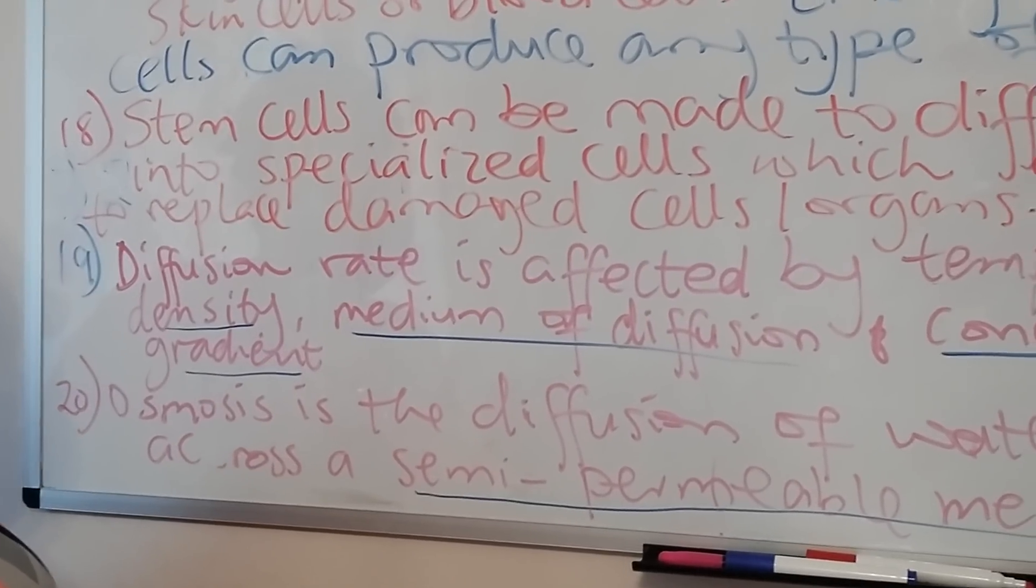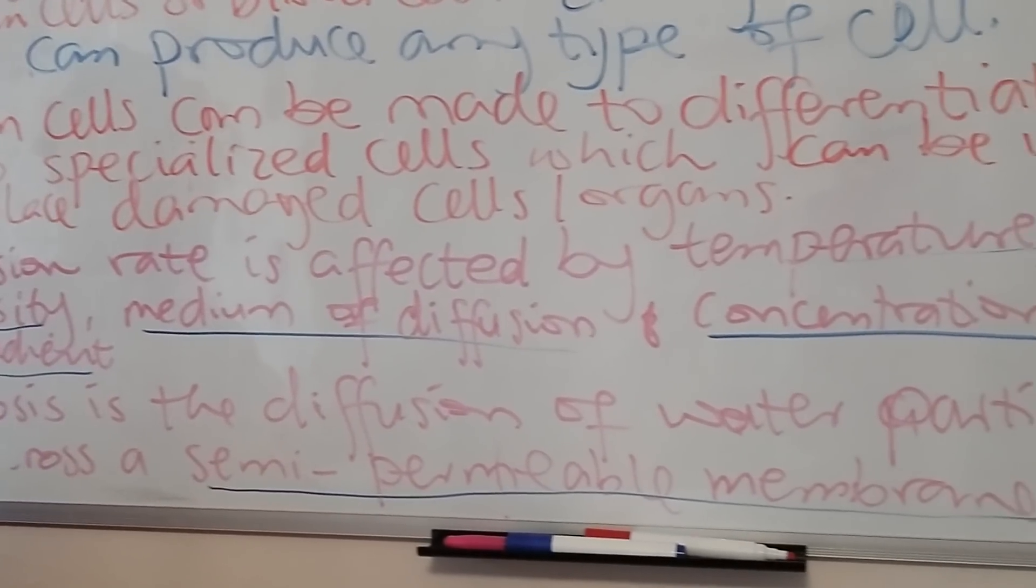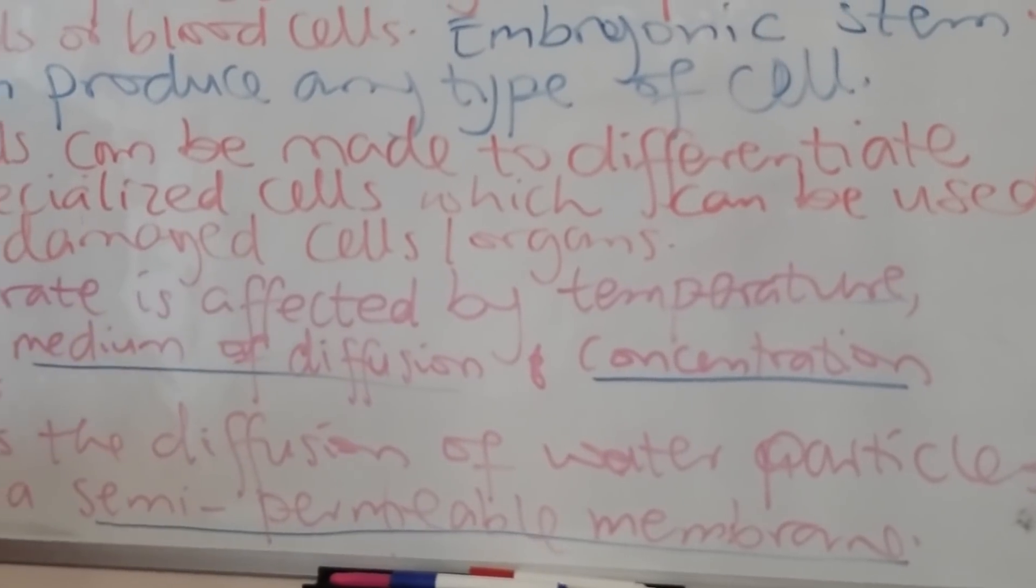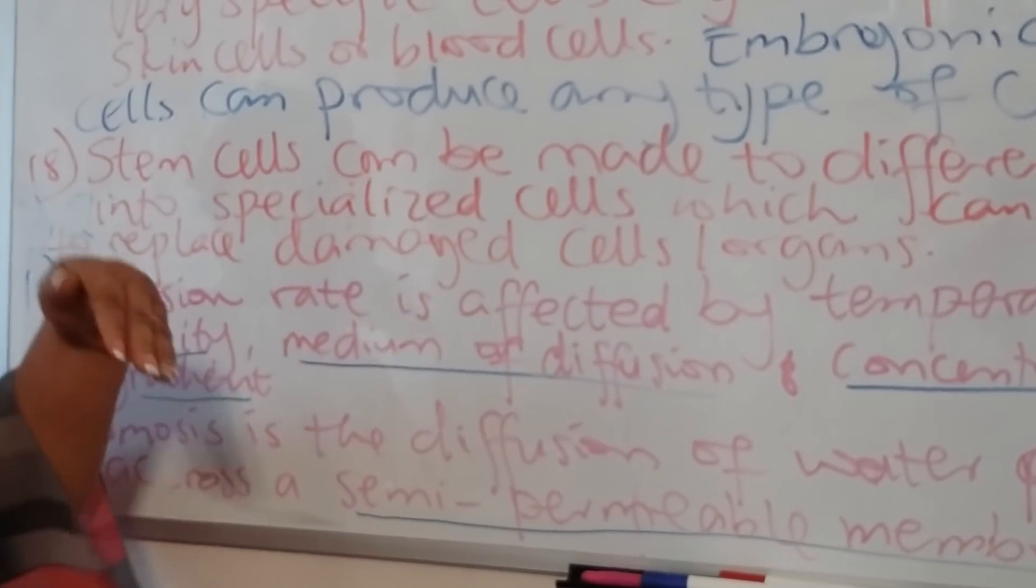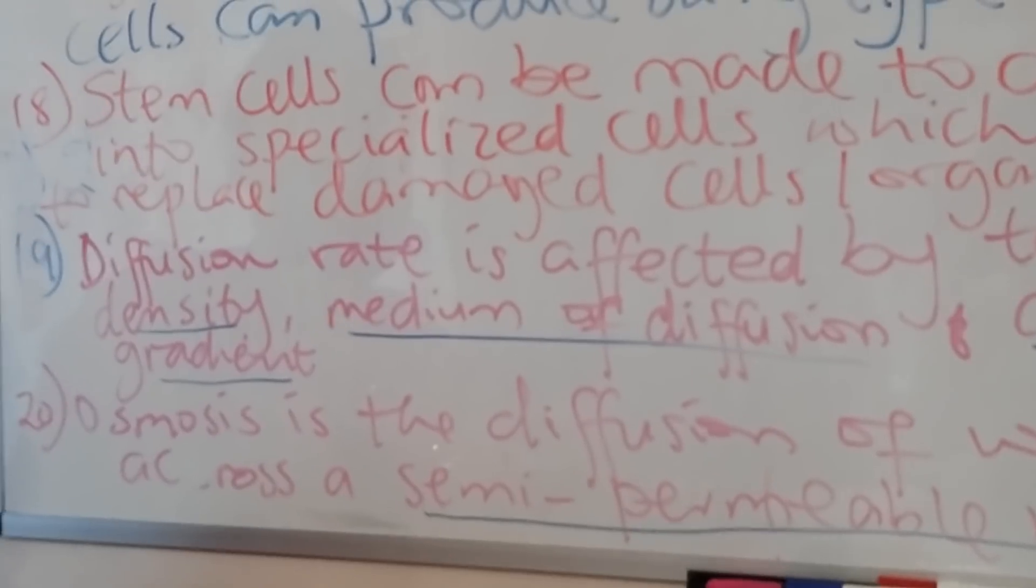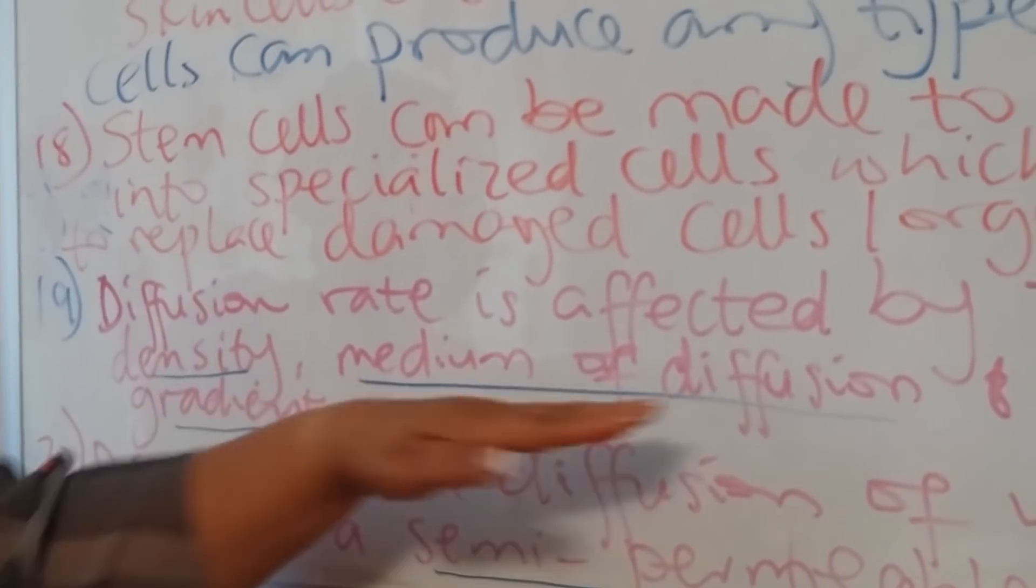Diffusion is movement of particles from high concentration to low concentration—down the concentration gradient. It's affected by temperature: the hotter it is, the more energy particles have, so more collision and more diffusion happens.